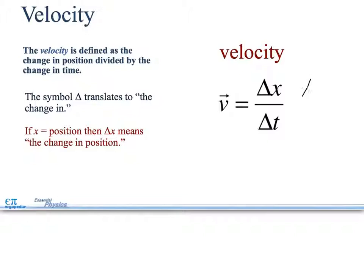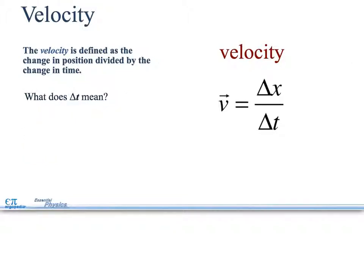This is the same as saying xf minus xi. And this is the same as tf minus ti, which will be your final x minus your initial x, or final time minus initial time. What does the delta t mean? If t equals time, that means the change in the time, like I explained in the other slide.